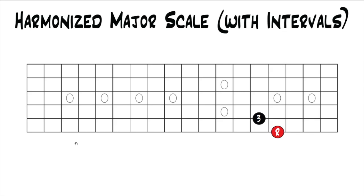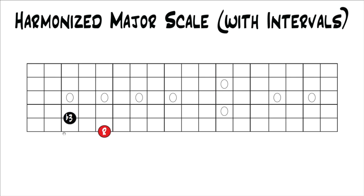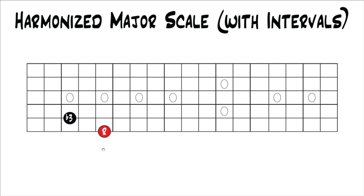You could do that on every string set — I'm just showing you starting with the sixth string root. When you're dealing with thirds, you can think of it as triads without the fifth. For example, this would be a major triad if you added the fifth there. Move up — this would be a minor triad if you added the fifth, and so on. So when you're dealing with thirds, you're really dealing with the same concept as with triads when we stack thirds, because you get major, minor, minor, major, major, minor. And the last one is also a minor third, because to make it diminished you have to have the fifth in it.